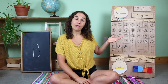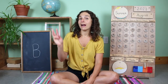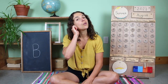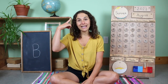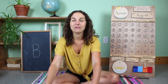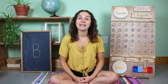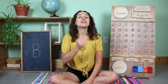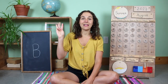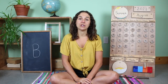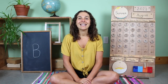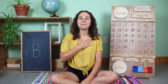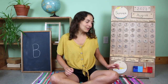Welcome to Circle Time. Before we get started with the calendar and weather chart, we have three things that we need to do. Number one, let's turn on our listening ears. Number two, let's put on our thinking hats. My thinking hat is over here, so I'm going to put it on top of my head. Today my thinking hat has some snaps underneath my chin, so I'm going to snap, snap, snap it up. And the third and final thing that we need to do is warm up our hearts. Boom, boom, boom, boom. Now we're ready to start Circle Time.